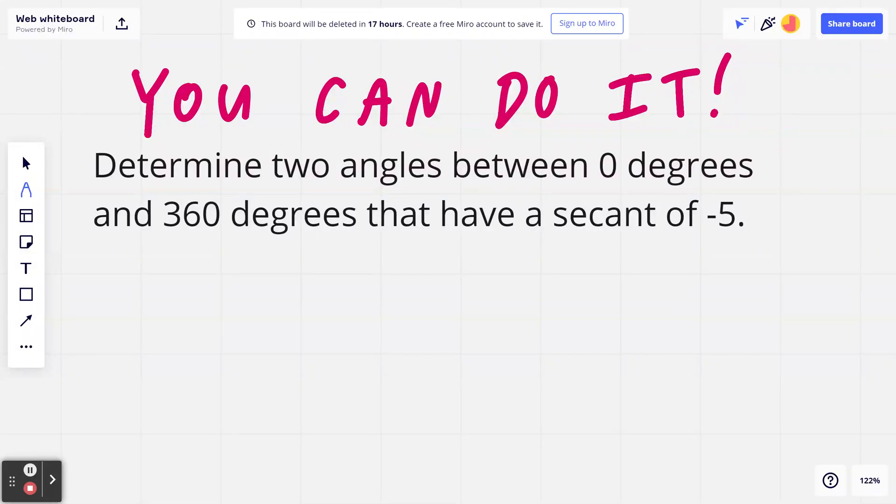Hi everyone, let's take a look at the following example. Determine two angles between 0 degrees and 360 degrees that will have a secant of negative 5.